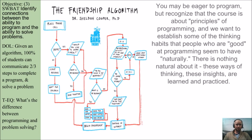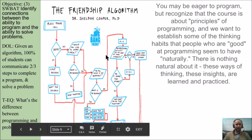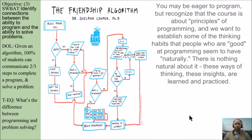The friendship algorithm — if you're a fan of The Big Bang Theory, this was on an episode. You may be eager to program, but recognize that this course is about the principles of programming. We want to establish the good thinking habits that people who are good at programming seem to have naturally. There's nothing natural about it — these ways of thinking and insights are learned and practiced.